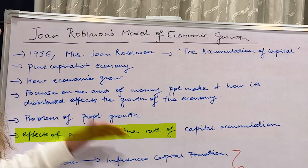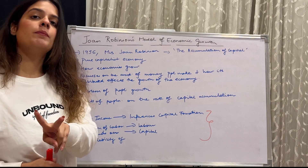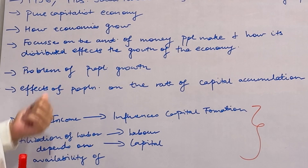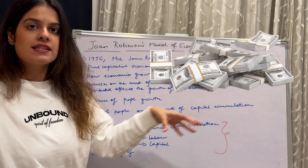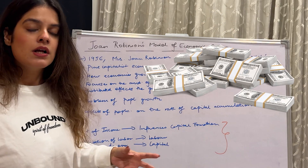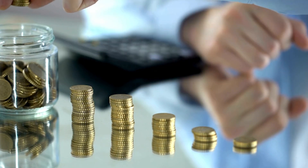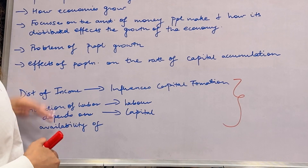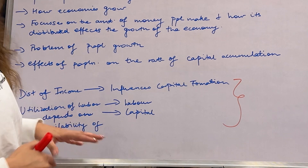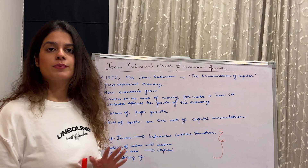The model also deals with the population problem and the effects of population on the rate of capital accumulation. We are going to focus on two fundamentals. Number one: the distribution of income influences capital formation. If someone has a lot of income, they can save that money, and if they save, they invest — which basically means capital formation. Secondly, the utilization of labor depends on the availability of both labor and capital.